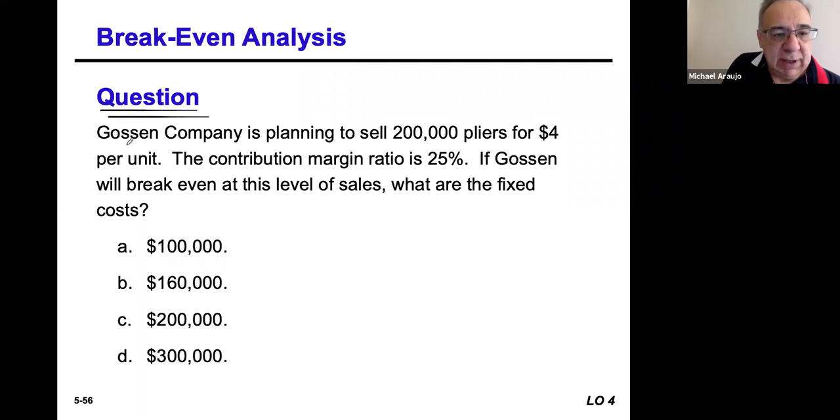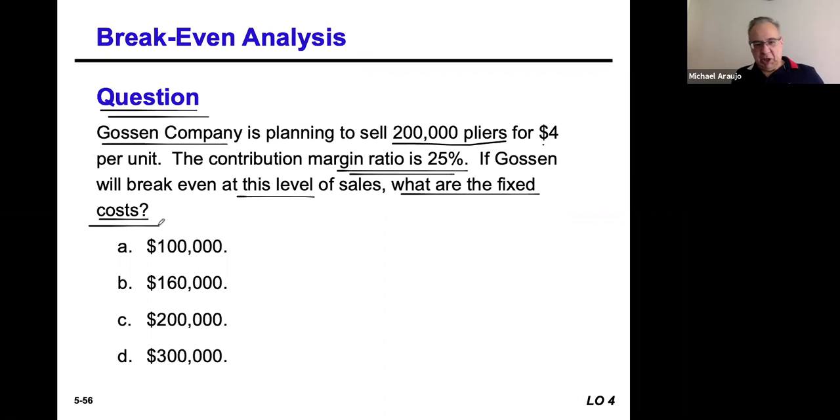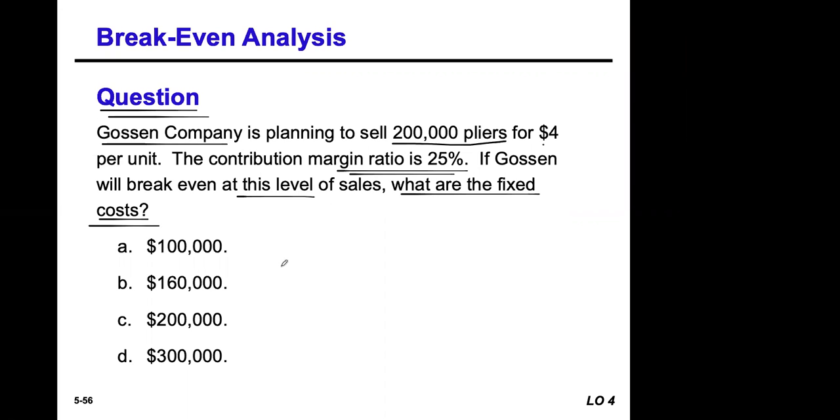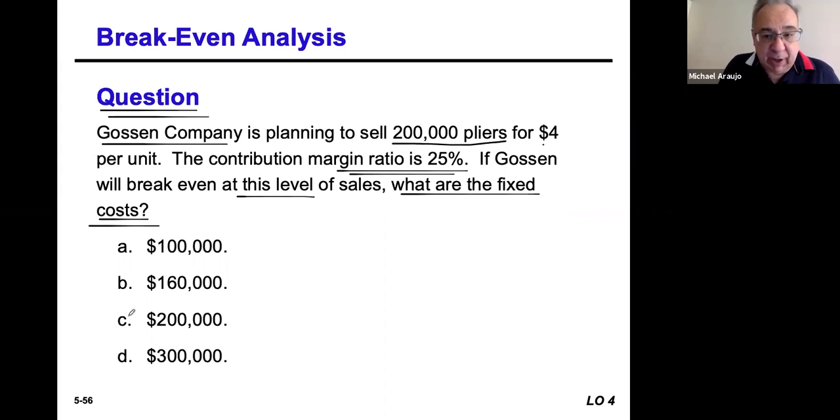All right. I got a question for you. Goss and company is planning to sell 200,000 pliers for four bucks each. Contribution margin ratio is 25%. So if Grass will break even at this level of sales, what are the fixed costs? This is loaded. Well, what do we need to know to fix this, to solve this one? What do you think? Answer is C. Your answer is C. Oh yeah. Okay. How did you get there? How did you get there? C. That's correct. But how did you get there?